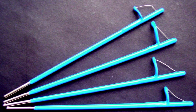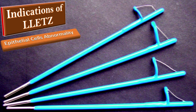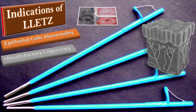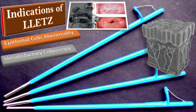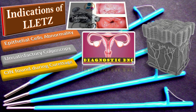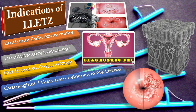What are the indications of large loop excision of the transformation zone? First is epithelial cell abnormality. Secondly, unsatisfactory colposcopy. Thirdly, the finding of cervical intraepithelial neoplasia during endocervical curettage. And fourthly, cytological or histopathological evidence of premalignant and malignant glandular epithelium.